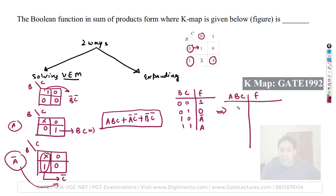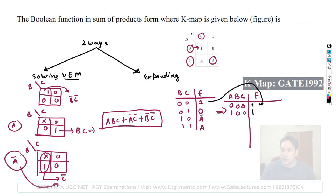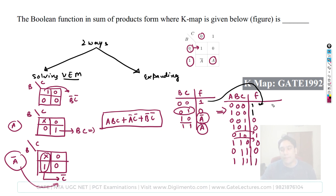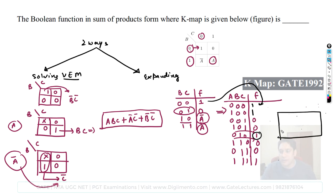When BC=00, F=1 for any A. When BC=01, F=0 for any A. When BC=10, F=A-complement (1 when A=0, 0 when A=1). When BC=11, F=A (same value as A). Now I have the complete function and can make a K-map for this three-variable function.